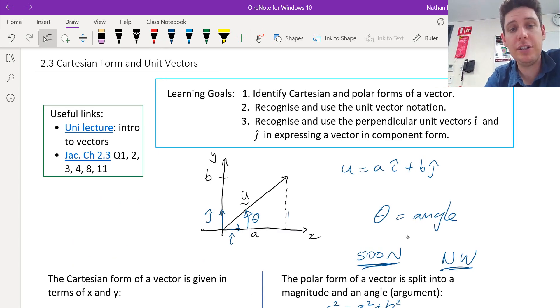So that is a summary of Cartesian form, polar form and unit vectors. I hope that was helpful. Thanks for watching.